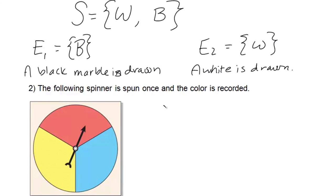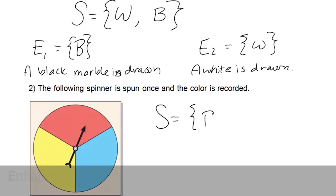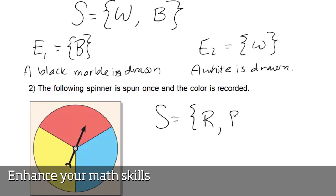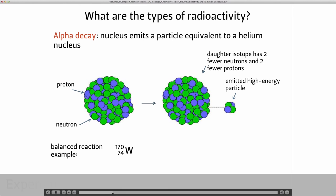And so, in our sample space, we'll have that it could land on red, it could land on blue, or it could land on yellow.